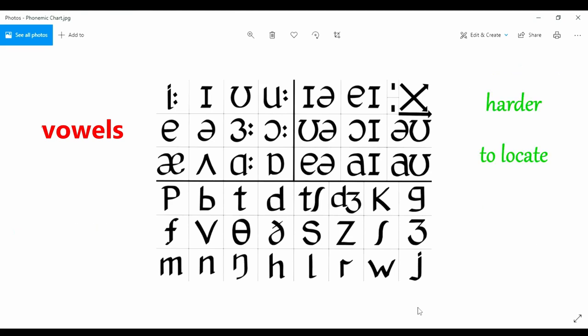Vowels are harder to locate and there is no obstruction to the flow of air. They are split into two sections, monophthongs and diphthongs. The tongue and mouth stays in one position in monophthongs, whereas for diphthongs the tongue and mouth have to move, combining the sound of two monophthongs.